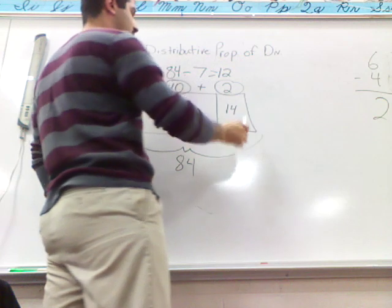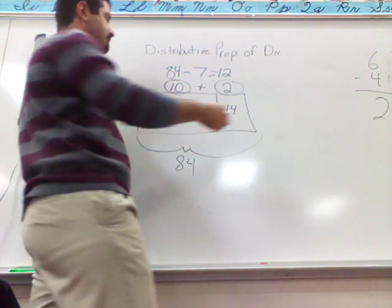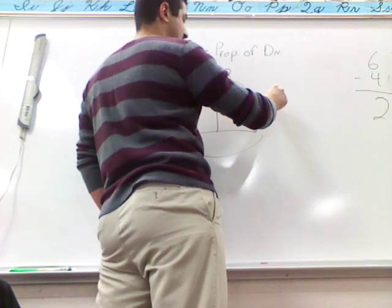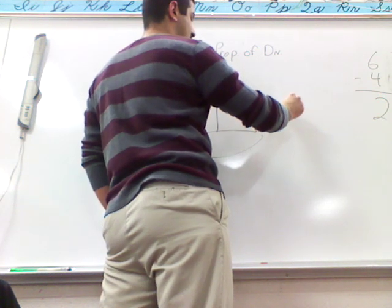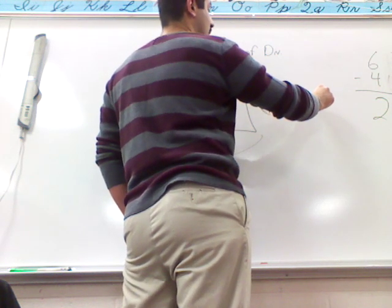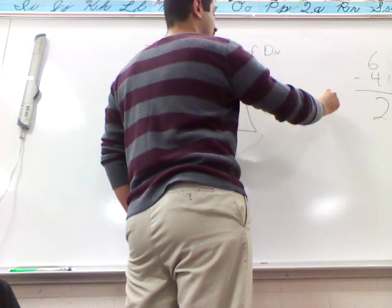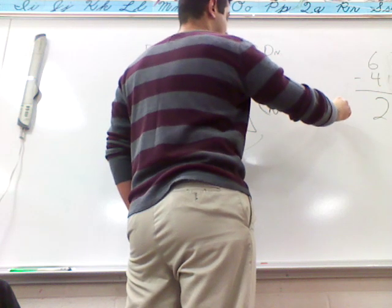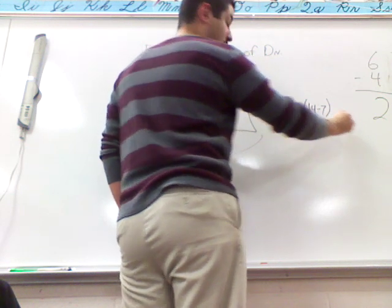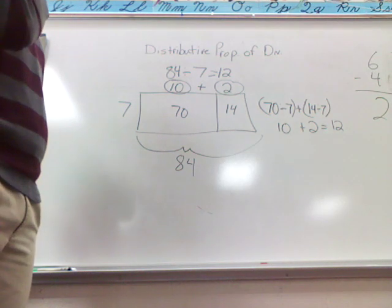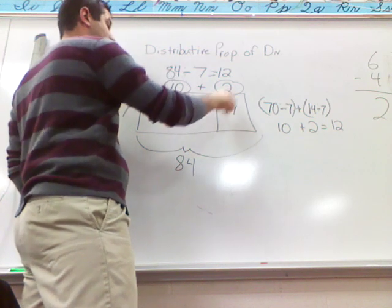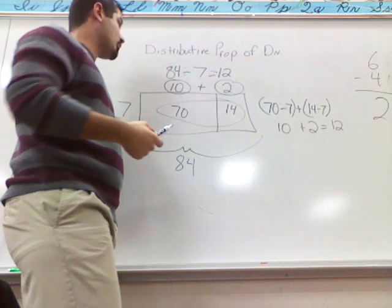Another way they're going to try and do it is break up your number. So 84 — break it into, it's the same as 70 divided by 7, put it in parenthesis because you do it first, plus 14 divided by 7. And so you get 10 plus 2 equals 12. Those are both part of the distributive property of division. We put these in here to make sure both parts together equal 84 also — that's another way we can double-check ourselves.